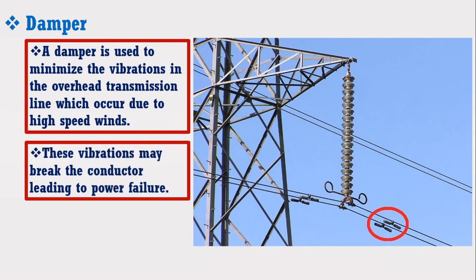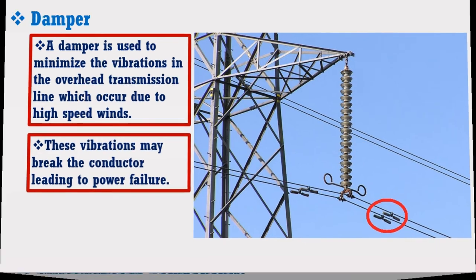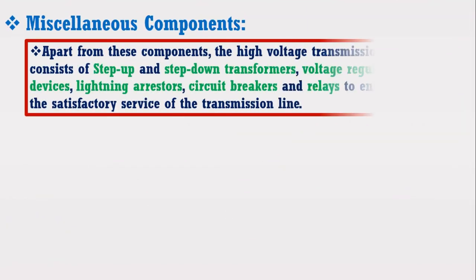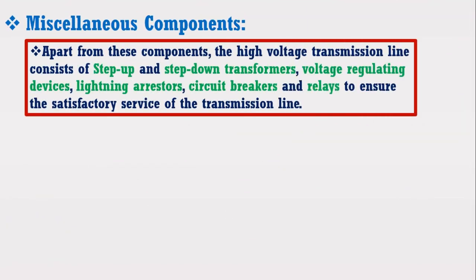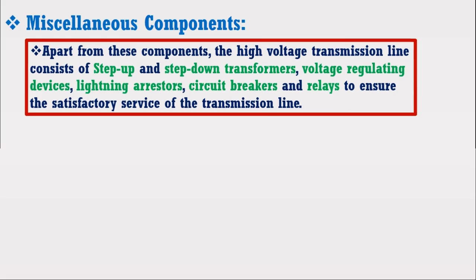Apart from these components, the high voltage transmission line consists of step up and step down transformers, voltage regulating devices, lightning arrestors, circuit breakers, and relays to ensure the satisfactory service of the transmission line.